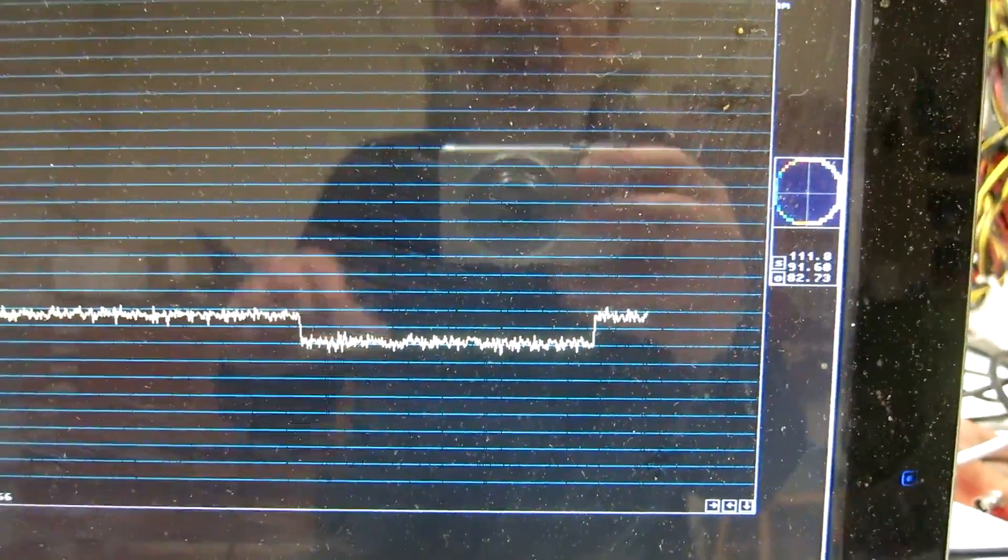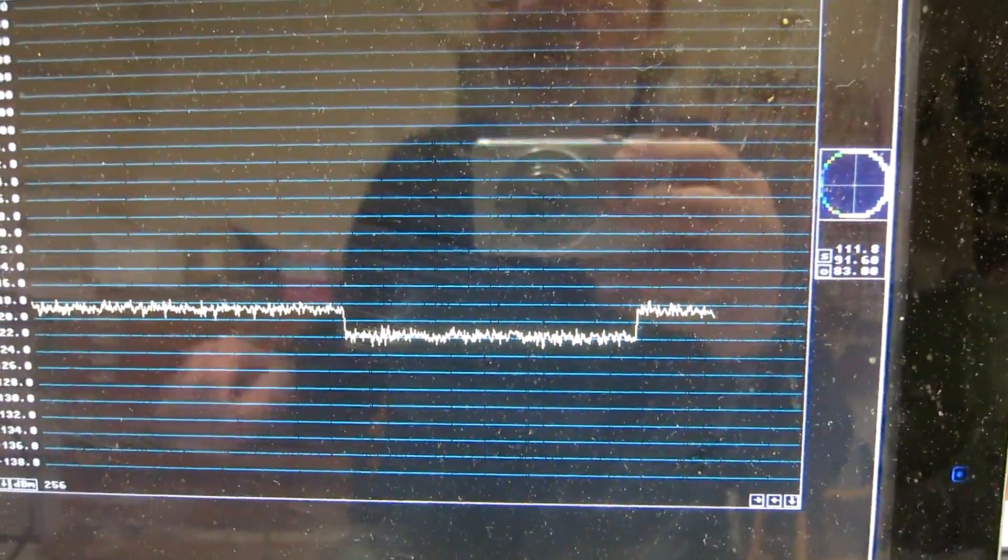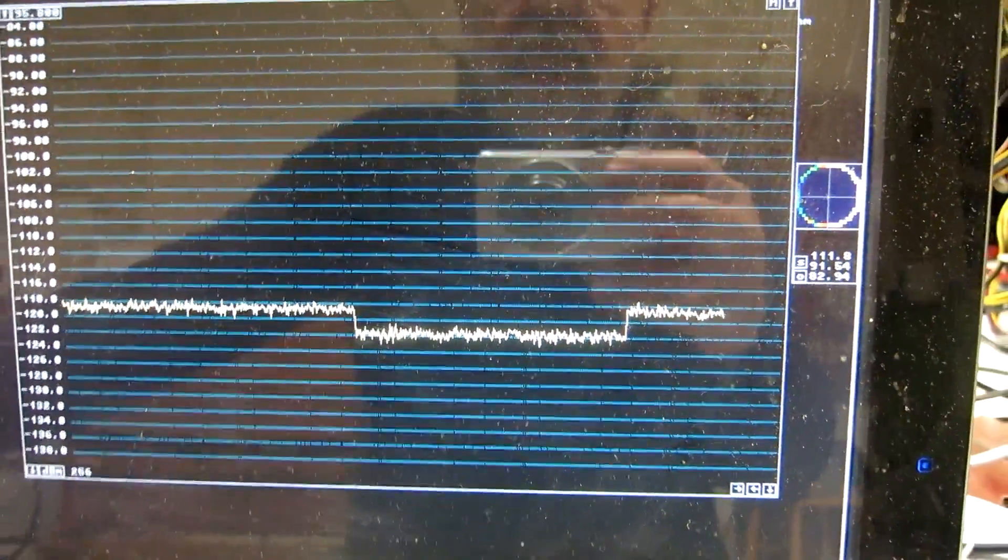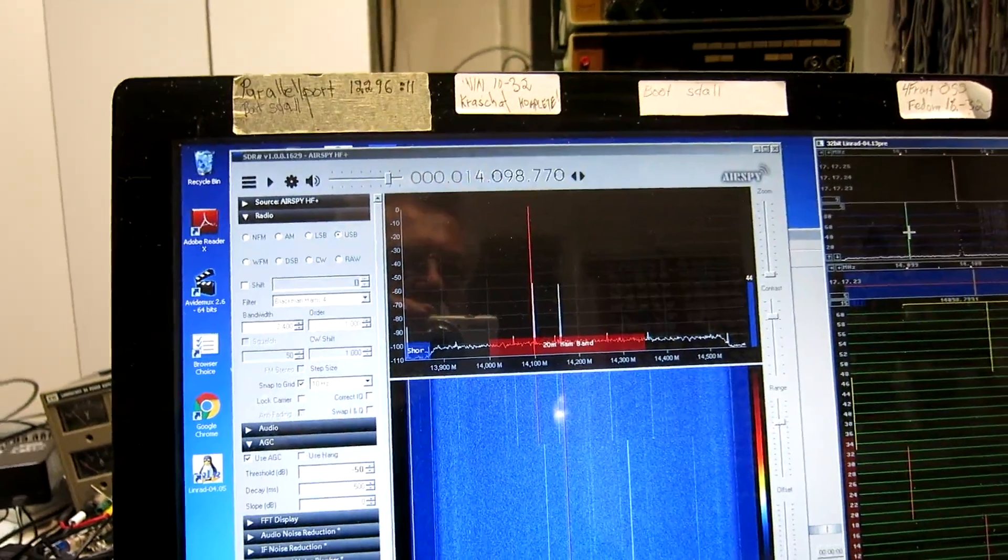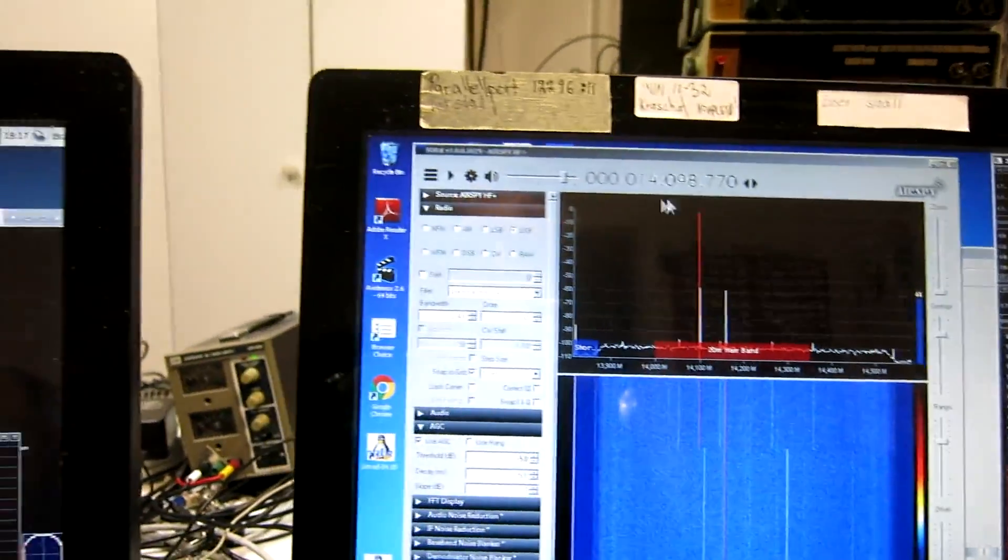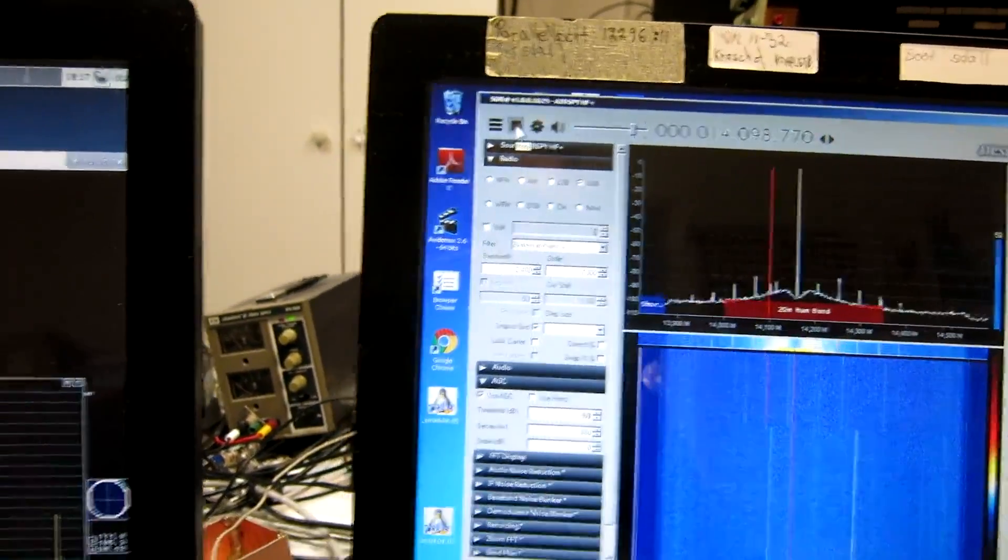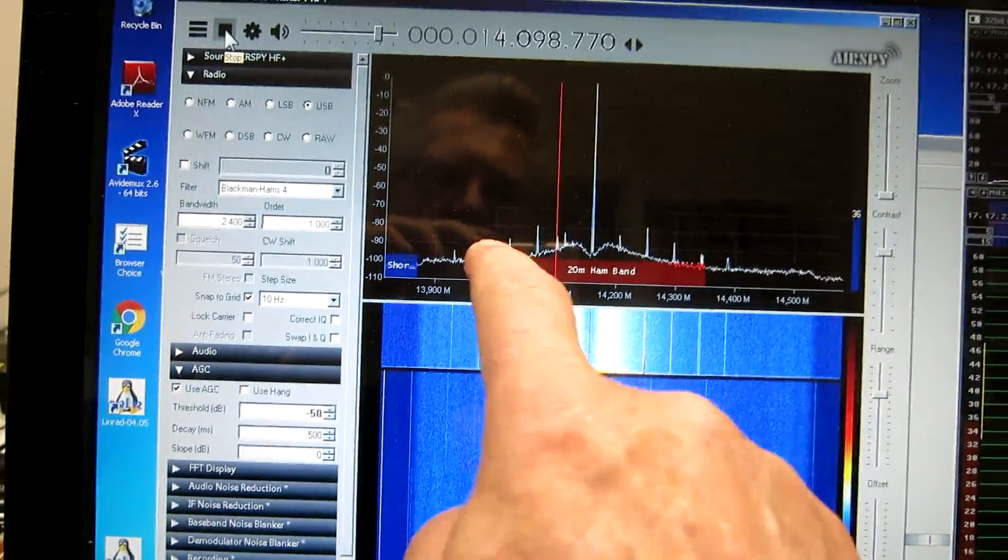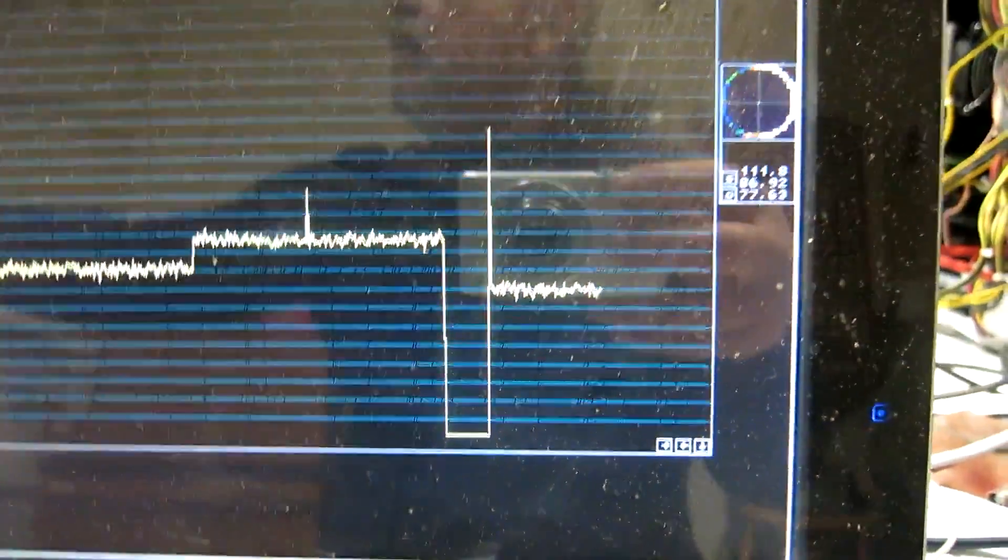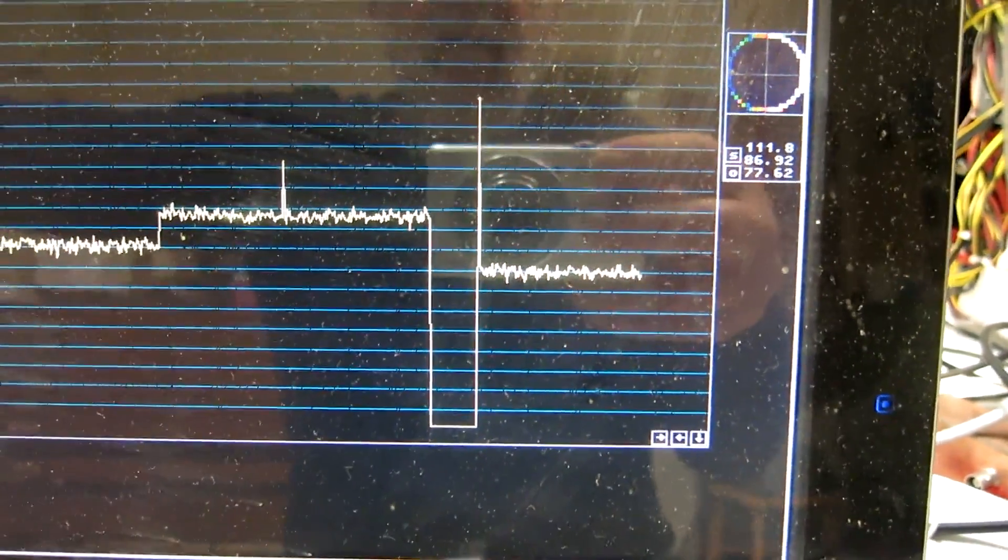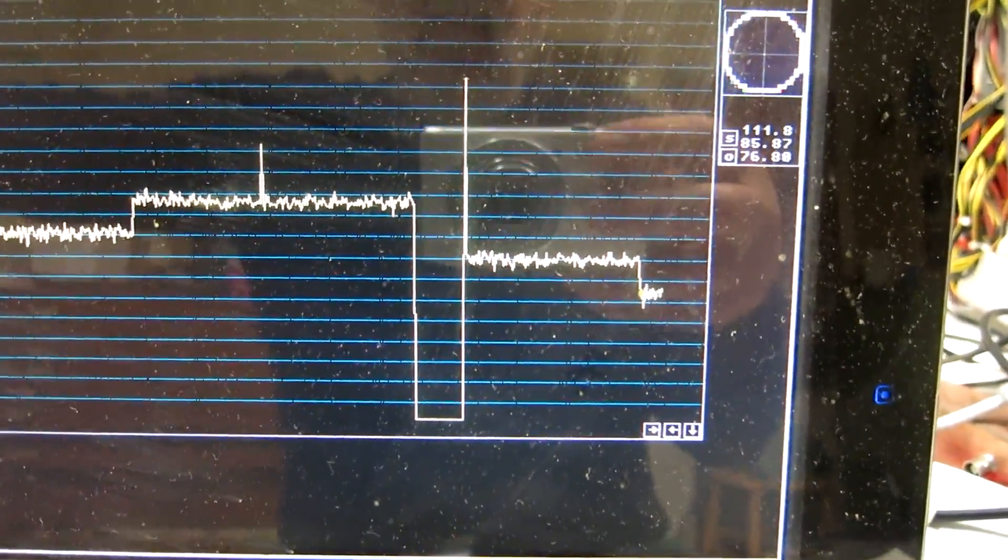And now I connect a strong signal. And you can see, it makes no difference on the Perseus. I switch off the Perseus, and switch on the AirSpy, and you can see here, we have a noise now. If I switch off the signal generator here, you can see we have also about 3 dB.